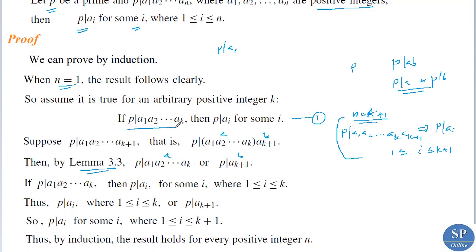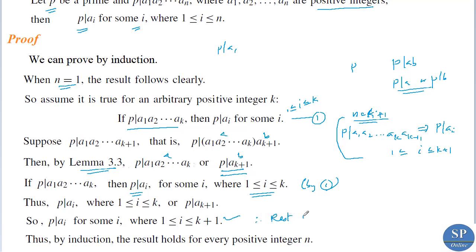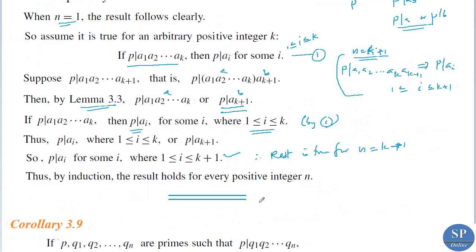By our inductive assumption, p divides a₁·a₂·…·aₖ implies p divides aᵢ for some i with 1 ≤ i ≤ k. Therefore we obtained that p divides aᵢ for some 1 ≤ i ≤ k, or p divides aₖ₊₁. Therefore p divides aᵢ for some i where i varies from 1 to k+1. So the result is true for n = k+1 as well. Therefore, by induction, the result holds for every positive integer n.